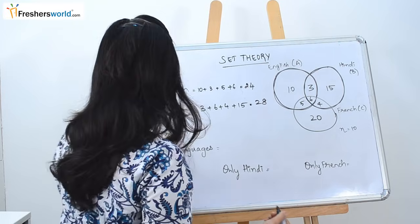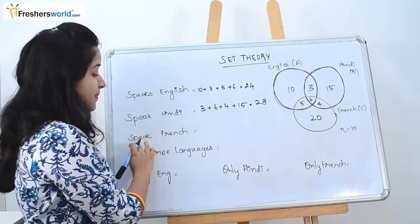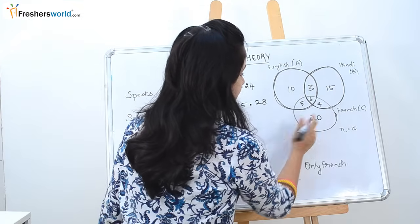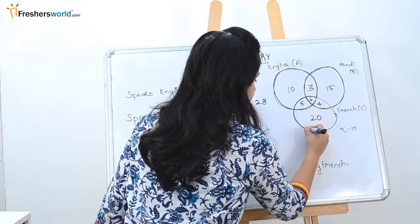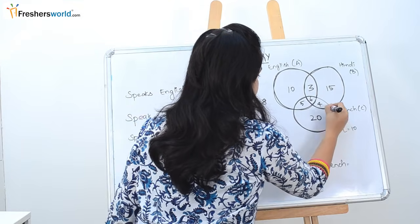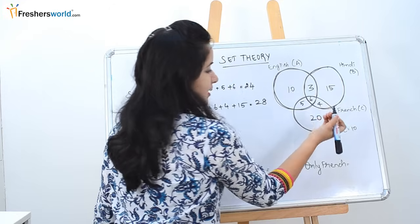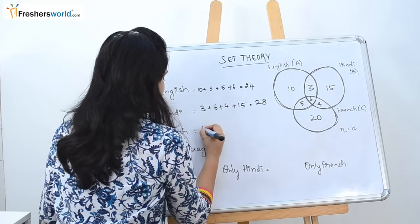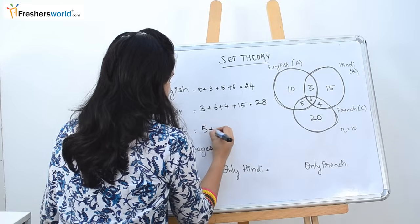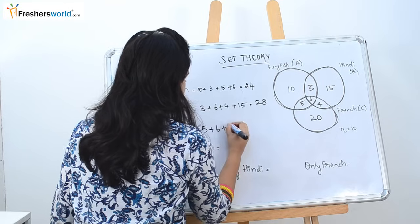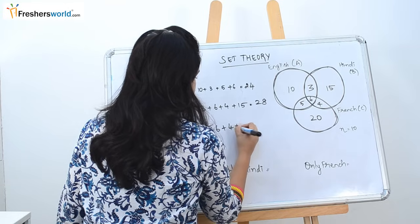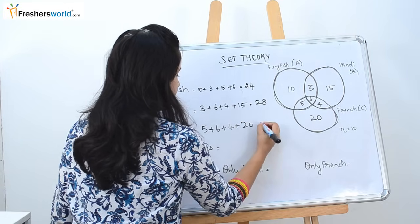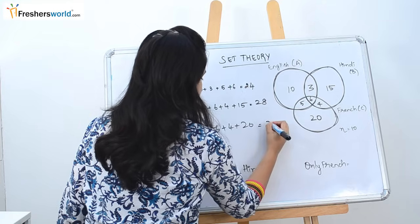Next, they are asking about people speaking French. In the case of French, you can see circle C, which is nothing but 5 plus 6 plus 4 plus 20. So 10, 20, 30, 35. The number of people speaking French is 35.